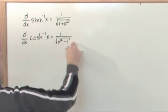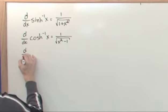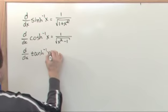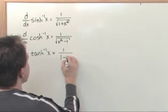So you see there's already some similarity here, but they're not quite the same, obviously. The derivative with respect to x of inverse hyperbolic tangent of x is equal to 1 over 1 minus x squared.